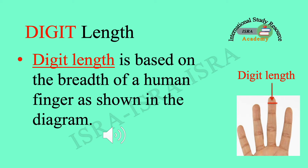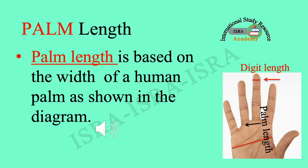Come to the first unit: digit length. Digit length is based on the breadth of a human finger, as shown in the diagram. Now come to the second ancient unit: palm length. Palm length is based on the width of the human palm, as shown in the diagram.